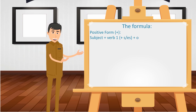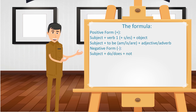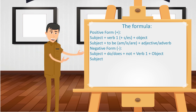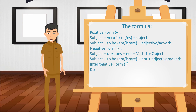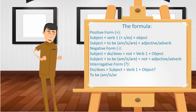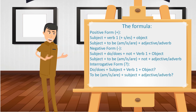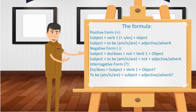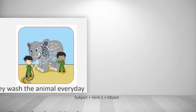Here is the formula of simple present tense. We have the formula for the positive form, the negative form, and the interrogative form. We can use these formulas to create sentences in simple present tense.